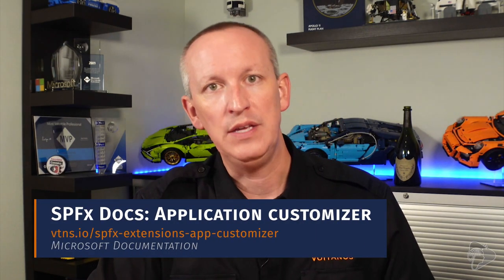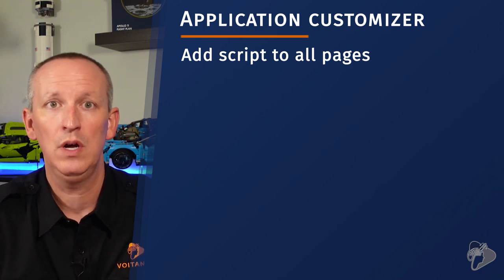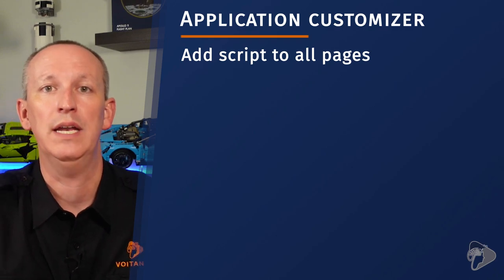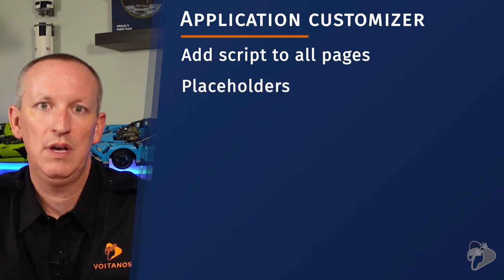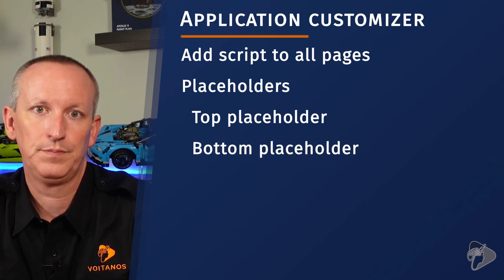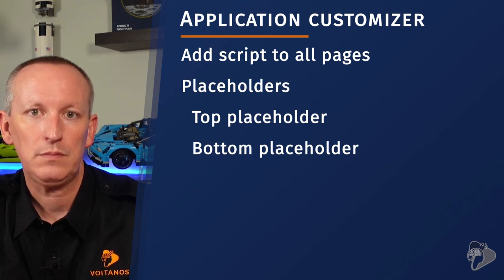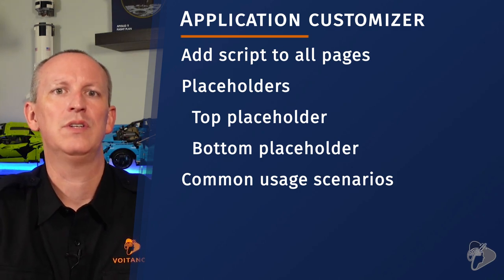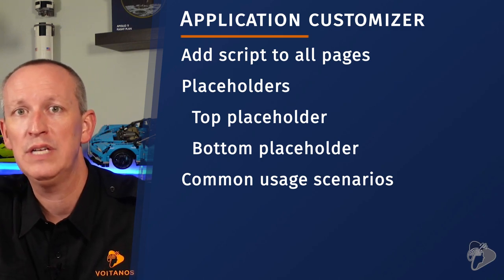When it comes to application customizers, these enable developers to do two things: add client-side script to all pages within a site where the customizer has been installed, or — combined with the tenant-wide deployment option — add client-side script to all pages across all sites throughout your tenant. This is done using the extension's onInit method. Make sure you also understand how placeholders work — there are two placeholders on every page: the top placeholder and the bottom placeholder. You should understand how to get a reference to the placeholders the correct and safe way in your code. Common scenarios for application customizers include adding a cookie or privacy dialogue notice, or adding telemetry and analytics to your tenant.